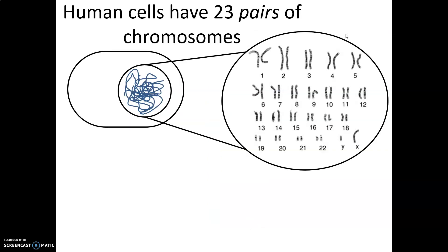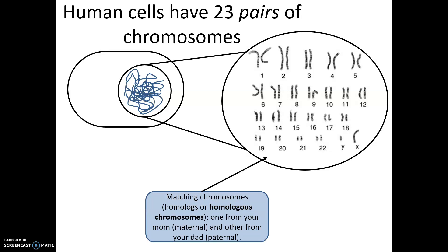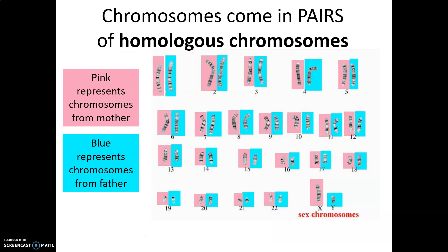Most cells have multiple chromosomes. Looking at the nucleus of a human cell, we can see 23 pairs of chromosomes. These are chromosome images taken with a microscope, and with the aid of a computer, a technician has lined these chromosomes up into pairs — matching chromosomes. Matching chromosomes are called homologous chromosomes. For each pair of homologous chromosomes, an individual got one from their mother and one from their father.